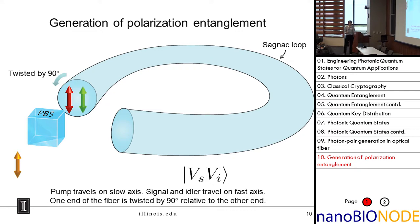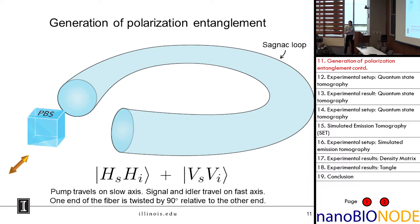To get the other half of the equation, HH, we send in a horizontally polarized pump. In that case, we have vertically polarized photons that rotate because we twisted the fiber, so they're horizontal by the time they exit. This gives us our HH state. Now, how can we say that's entangled?